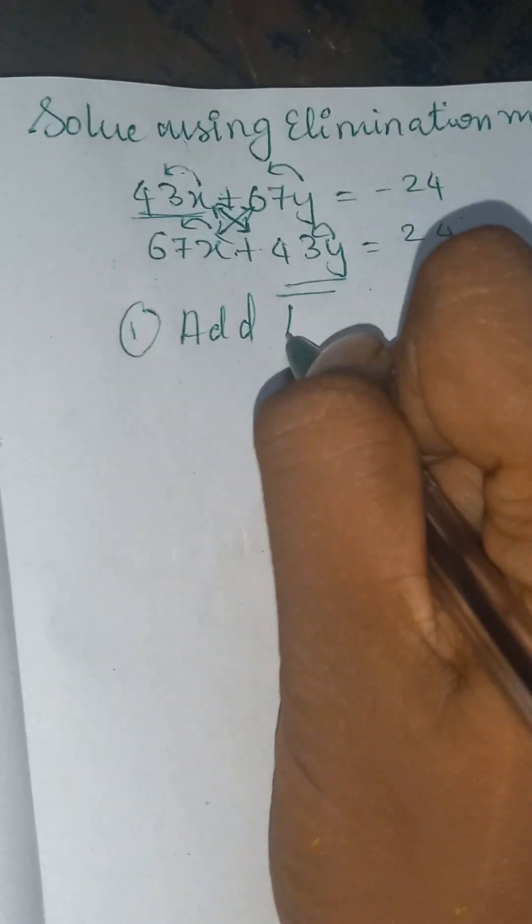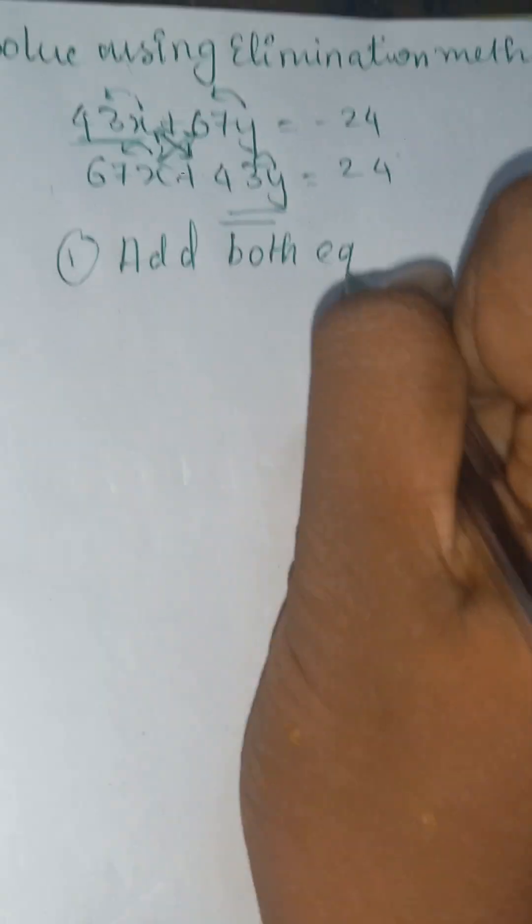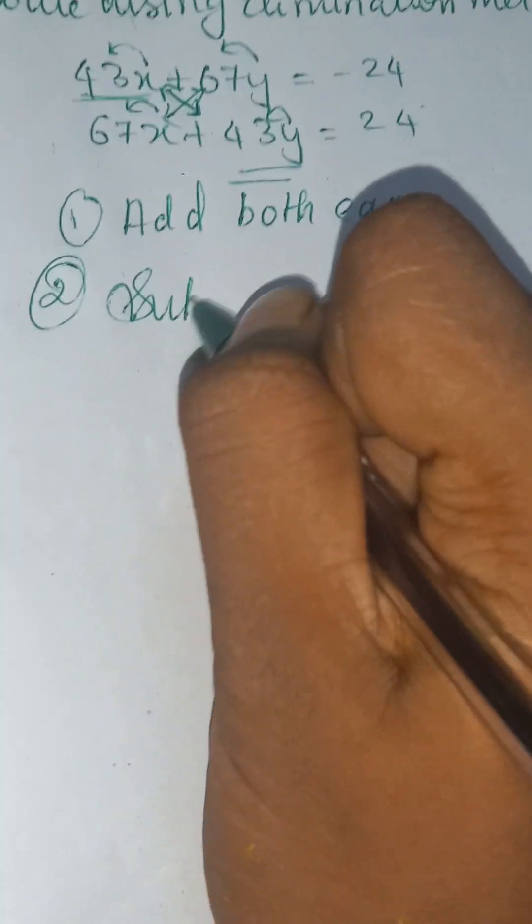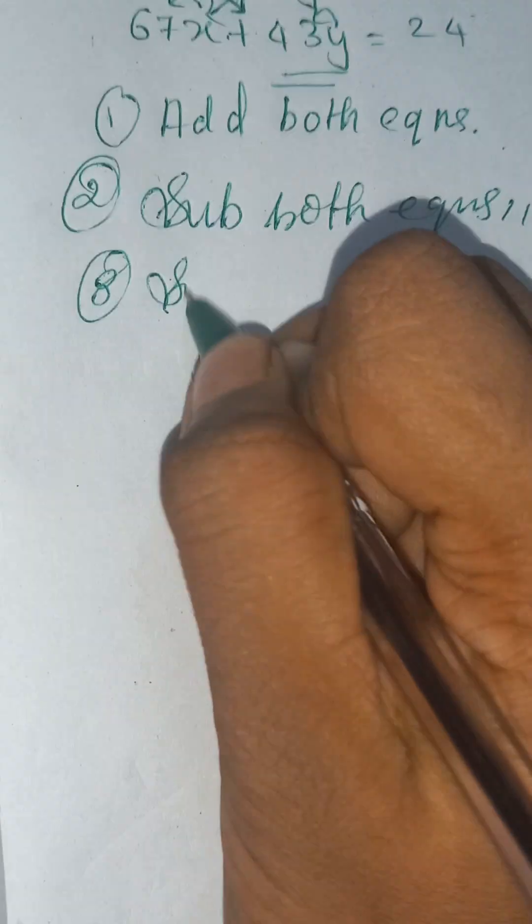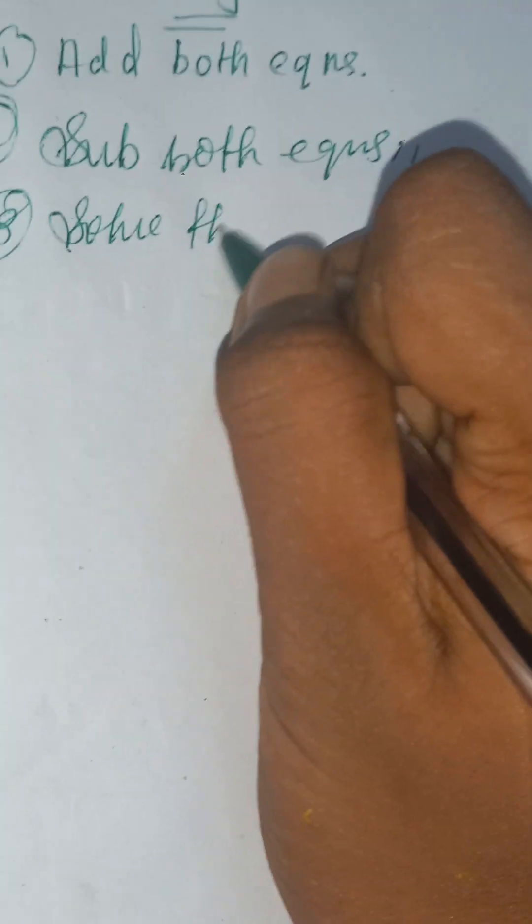Add both equations, and the second step is that you have to subtract both of the equations. Then you have to solve those equations again. These are the steps which you must follow.